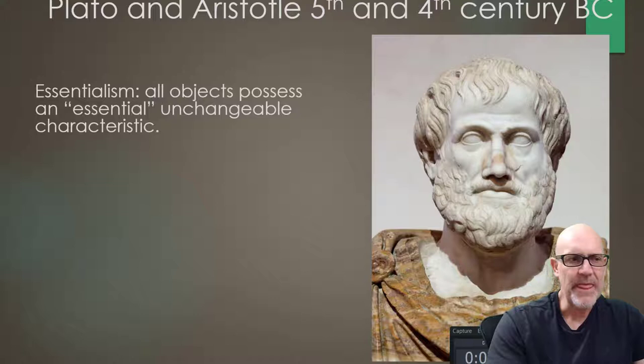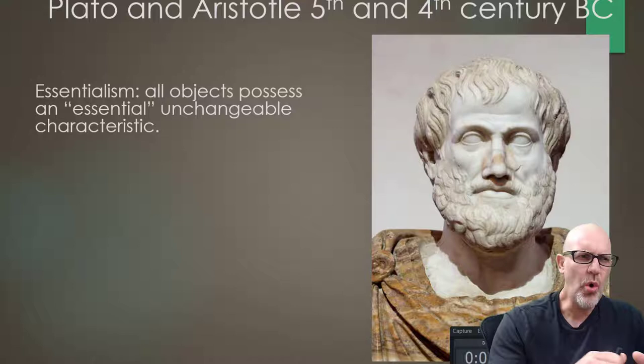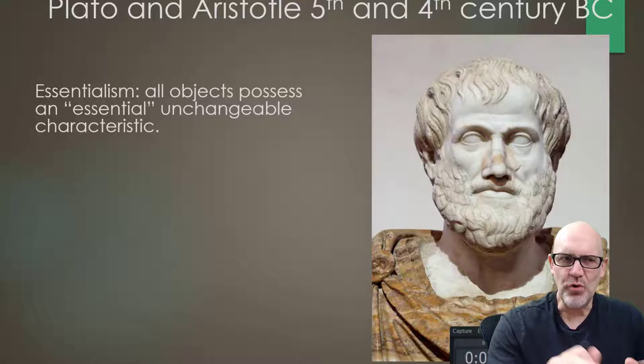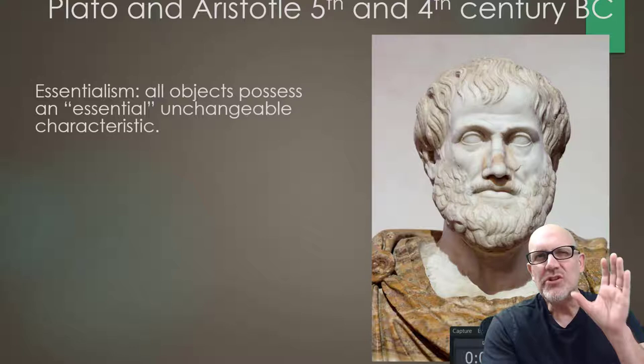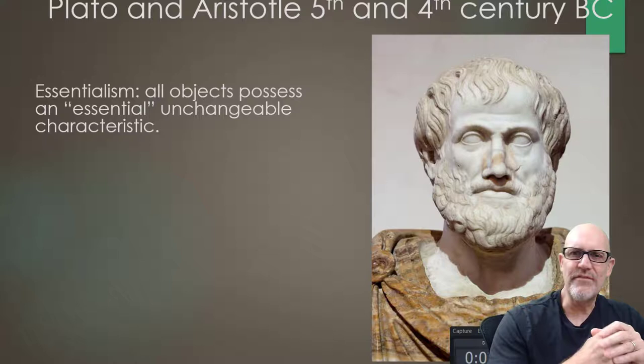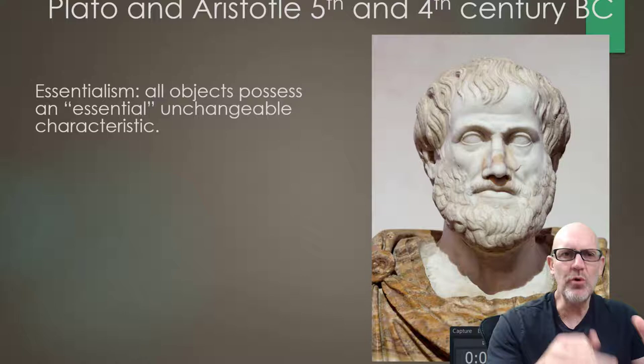Essentialism essentially says that all objects possess an essential, unchangeable characteristic. In different philosophical works you'll find different terms used — forms, or ideas. These concepts are very similar to each other or slightly different. The idea is that in the world there exist particular things that have some kind of essential, real, universal property in the mind of a supreme being. Socrates and Plato certainly believed that; Aristotle seems to waver on whether there is a supreme divine being. But all three believed in this concept of essentialism.